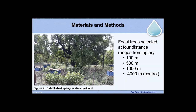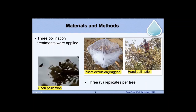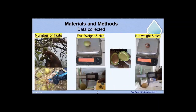You can see in the background picture that the apiaries have been fenced off to protect them from theft and fire, and grazing. The trees you see in the picture are mainly Shea butter trees. Three treatments were applied: open pollination, insect exclusion bag, and hand pollination — with three replicates each per tree. Data collected were number of fruits, fruit weight, fruit size, and after depodding, nut weight and nut size.